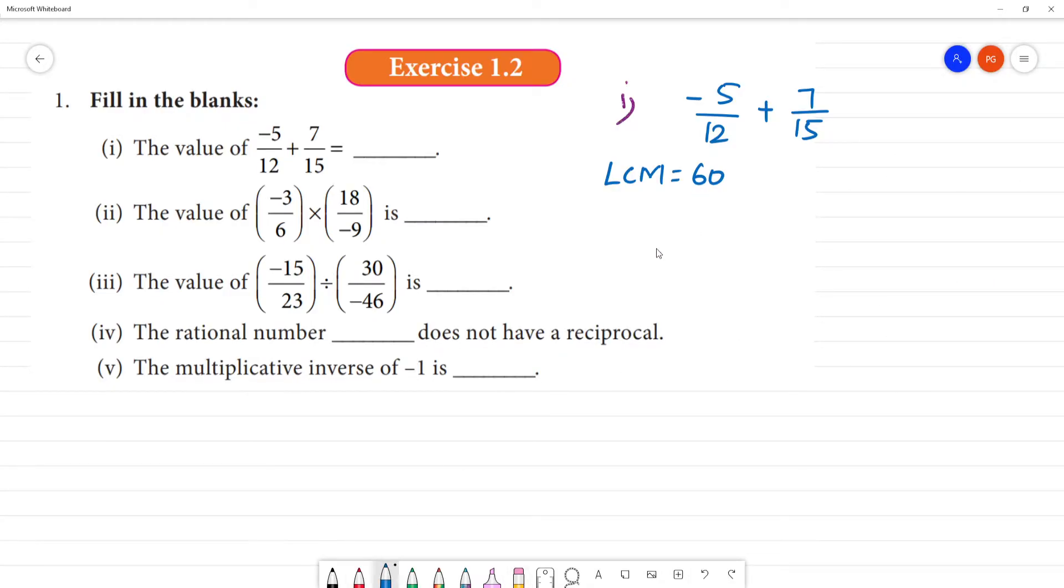LCM is 60. Now, what do we do? To convert to equivalent fractions, 60 divided by 12 is 5. For 7 by 15, 60 divided by 15 is 4. This equals minus 5 into 5 is 25 by 60 plus 7 into 4 is 28 by 60.